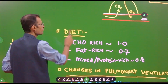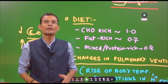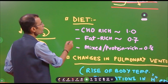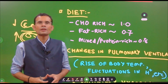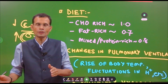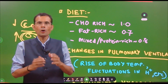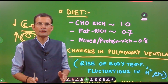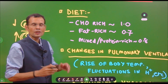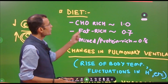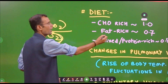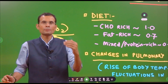Now let us see the factors that will influence the respiratory quotient. Starting with diet — the nutrients are metabolized in the presence of oxygen and CO2 is liberated. Obviously, nutrients are a determining factor for how much oxygen is consumed and how much CO2 is liberated. For instance, a carbohydrate-rich diet raises the respiratory quotient to 1.0, whereas a fat-rich diet decreases it to 0.7.